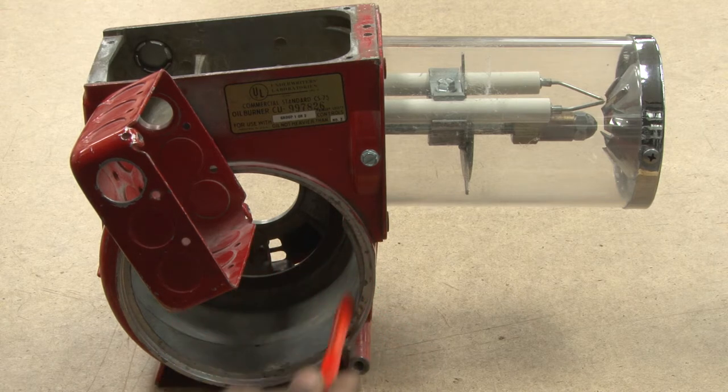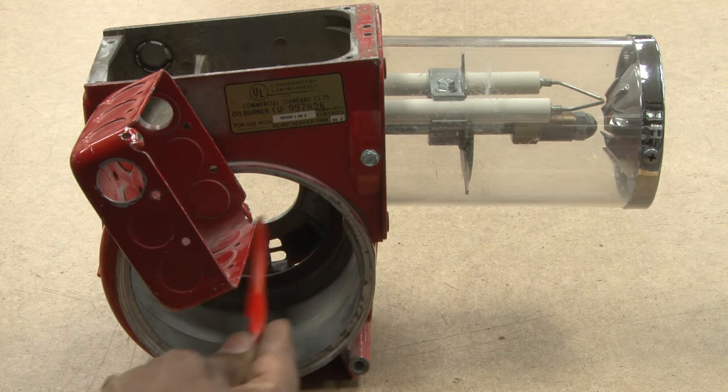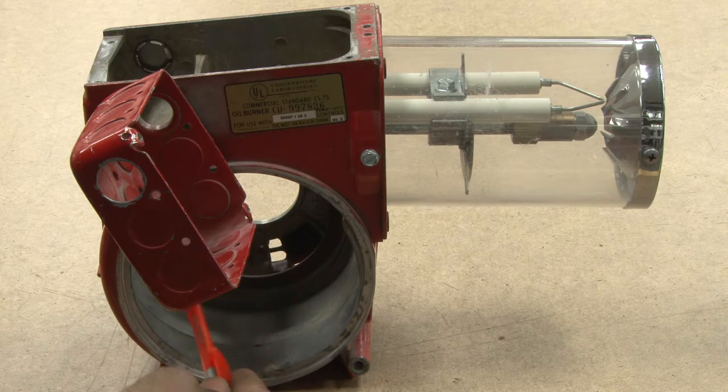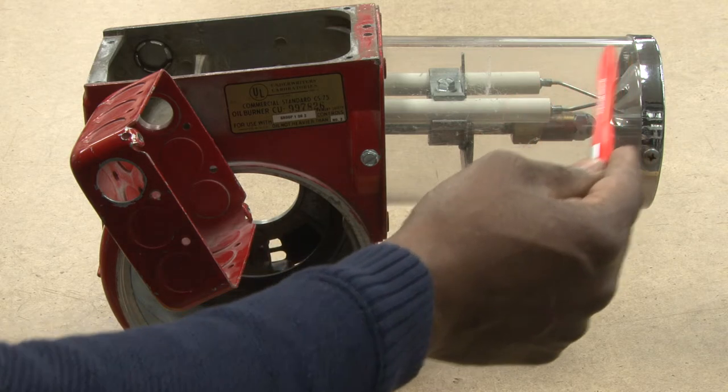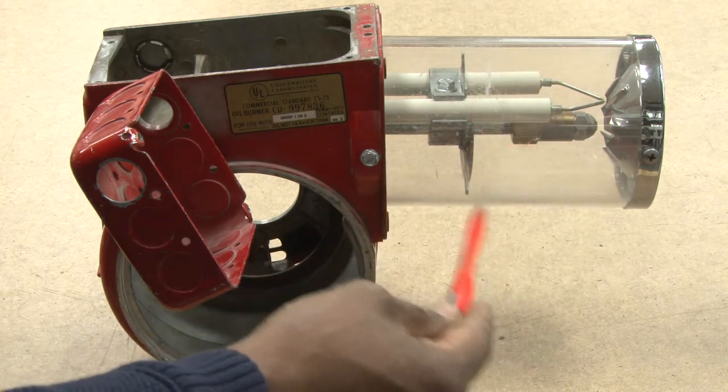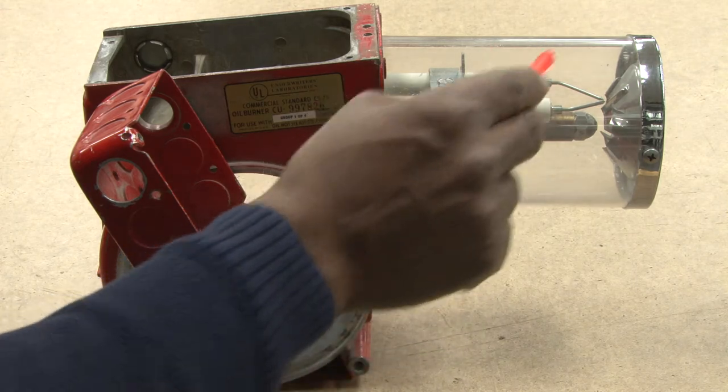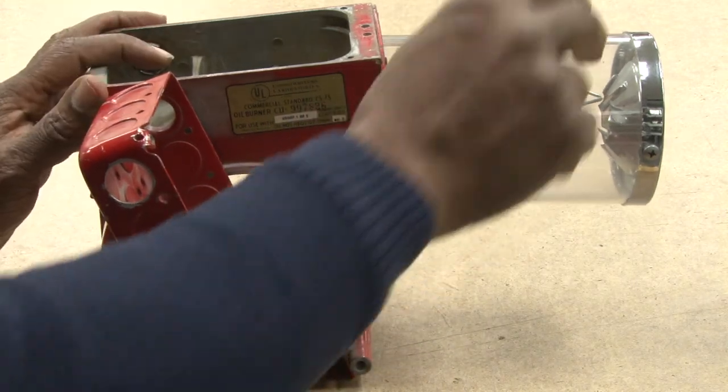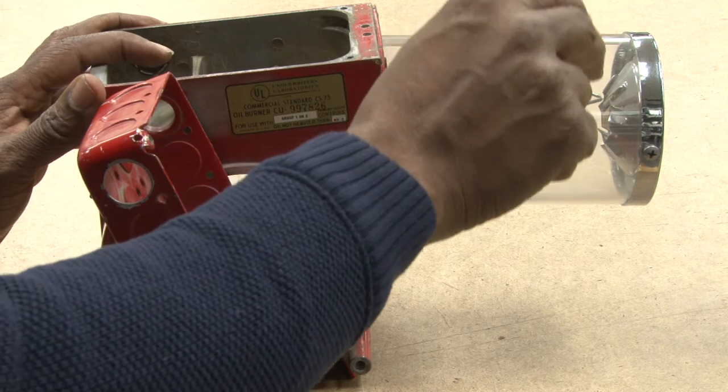This is the blower assembly. In this area here is where the blower will be connected. But in this burner tube it's clear so you'll be able to see the electrodes and the oil tube with the nozzle.